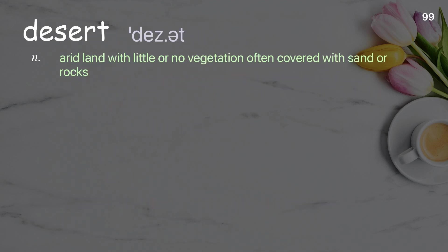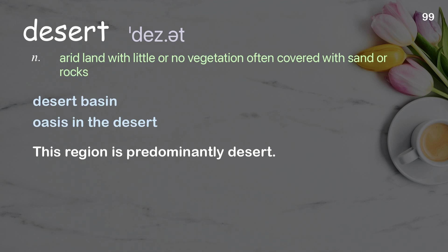Desert — arid land with little or no vegetation, often covered with sand or rocks. Examples: desert basin, oasis in the desert. This region is predominantly desert.